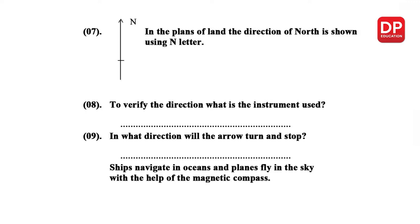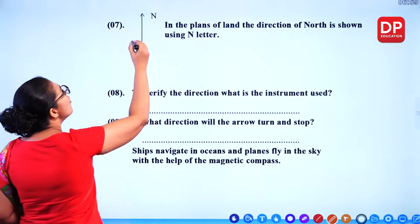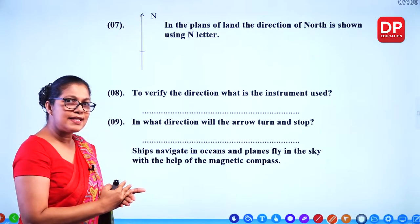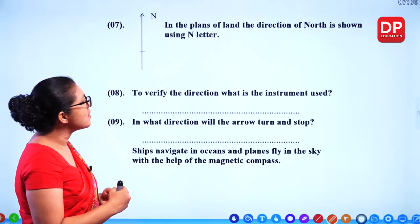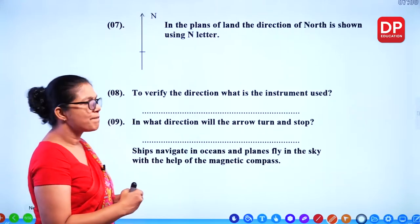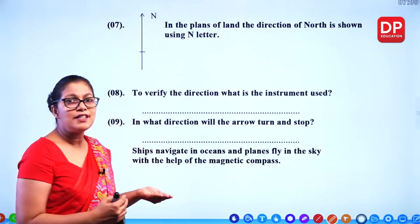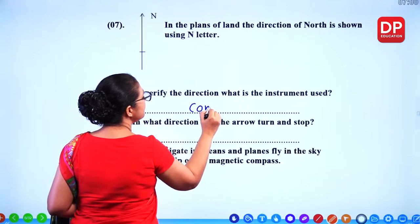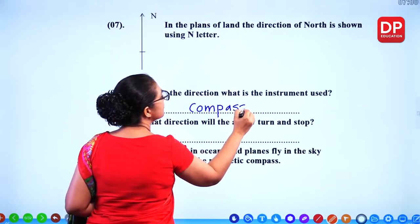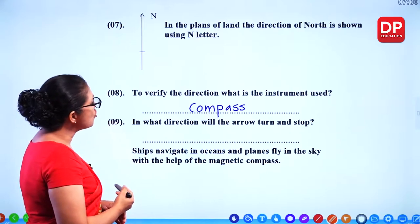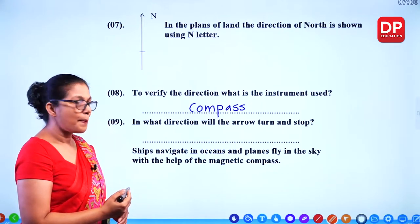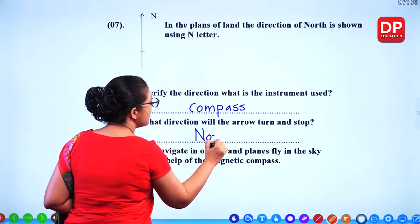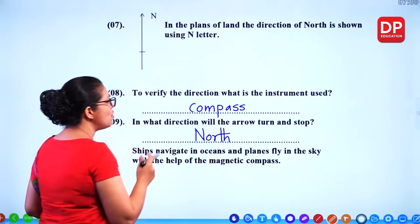In plans of land, the direction of north is shown using the letter N — you see a vertical line with N, which represents north. To verify the direction, the instrument used is the compass. The red colour pin of the compass always points to north.